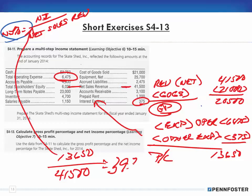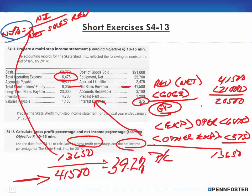The key difference between the gross profit percentage and the net income percentage is what goes in the numerator — the denominator, net sales revenue, stays the same at $41,500 for both. Gross profit goes in the numerator for the gross profit percentage; net income goes in the numerator for the net income percentage. Use that association so you're not memorizing everything. That's it for this problem — contact your instructor if you need help. In the next series of videos we'll be moving into the exercises for chapter 4.